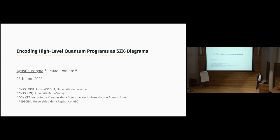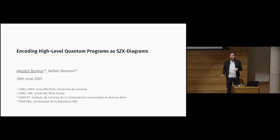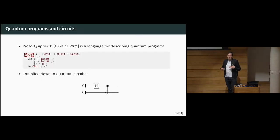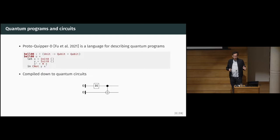This is a joint work with Rafael Romero, another PhD student from Buenos Aires. What we did was describe a method for compiling high-level quantum programs into some intermediate representation using the ZX calculus. To describe this compilation method, we first start with some representation of quantum operations. For that, we can use the Proto-Quipper-D language, which is a member of the Proto-Quipper family, which is a formalization of the Quipper language for quantum programs.